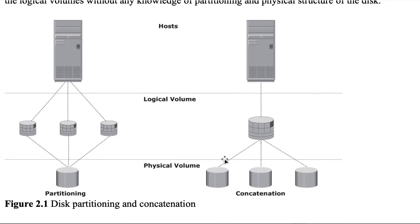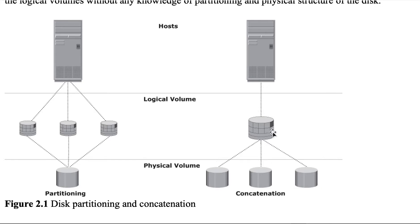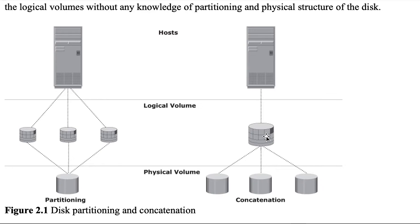Here is how it looks: we have hosts, and then the physical volume is just one big hard disk drive. The logical volume considers it as three smaller disks — these are logical partitions. Or the other way around: you might have three small disks, and as the logical volume, it is considered as one large disk. That is concatenation.